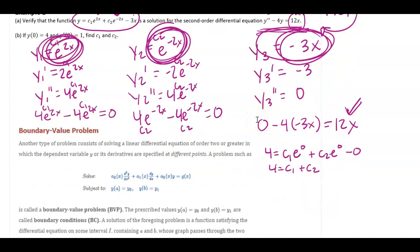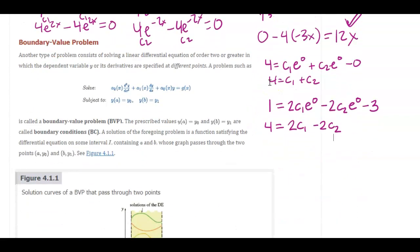And then y prime being equal to negative 1. Okay, so that would be 1 is equal to 2c1 e to the 0, minus 2c2 e to the 0, minus 3. Add that over, I'm going to have 4 is equal to 2c1 minus 2c2. I'm going to multiply this top function by 2. So if c2, these would cancel and I would get 4c1 equals 12. So c1 has to be 3.